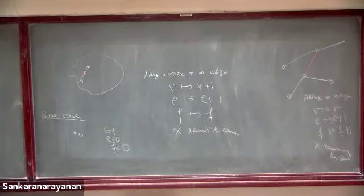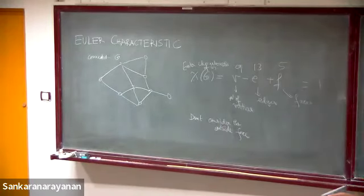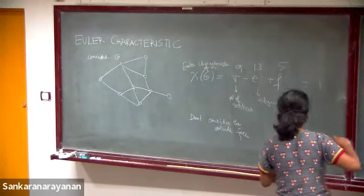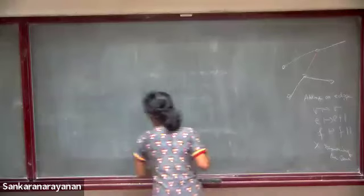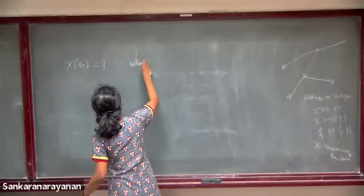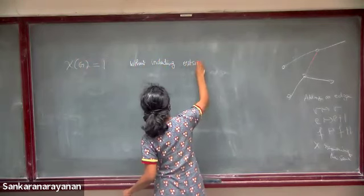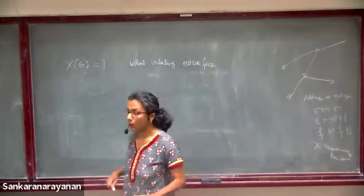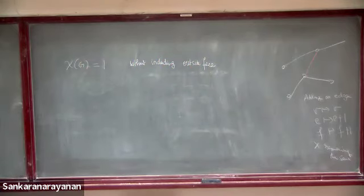Chi of G equals one without including outside face. Now let's include the outside face. This is not very interesting — the answer is always one. So what we're going to do is draw graphs on different kinds of surfaces. You can think of this as a graph drawn on a disk.